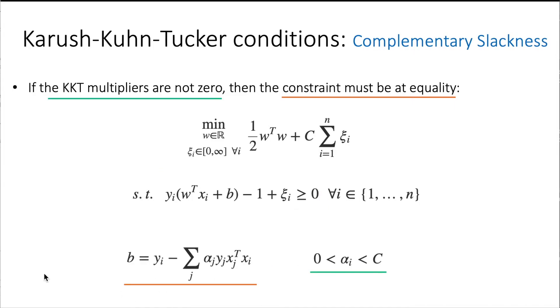And now this tells us that the KKT multipliers are not zero. Even though we were allowing alphas to be between zero and C, now we must make sure that they are not equal to zero or to C, that they are in between. These two things come from the complementary slackness condition and this allows us to find b.